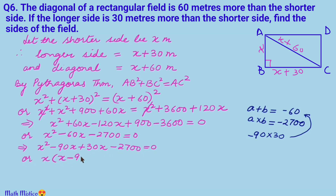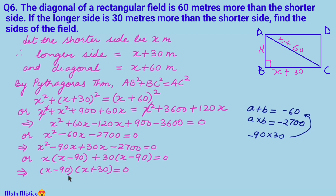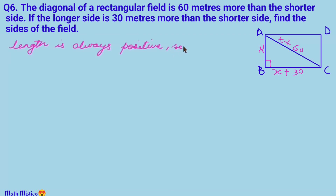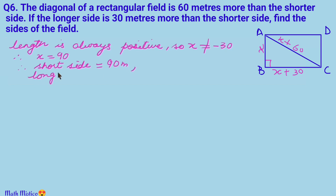Splitting the middle term: x² − 90x + 30x − 2700 = 0, giving x(x − 90) + 30(x − 90) = 0, or (x − 90)(x + 30) = 0. So x = 90 or x = −30. Since length cannot be negative, we reject x = −30. Therefore the shorter side is 90 meters and the longer side is 90 + 30 = 120 meters.